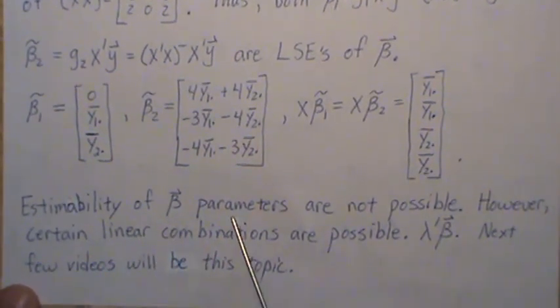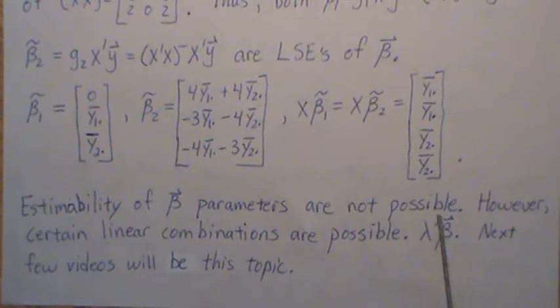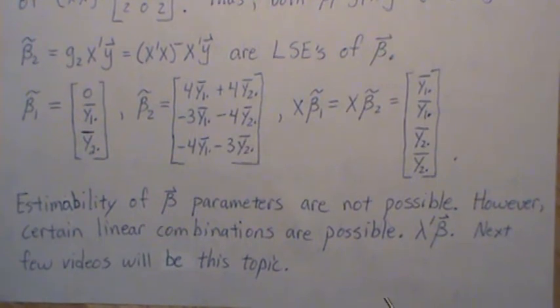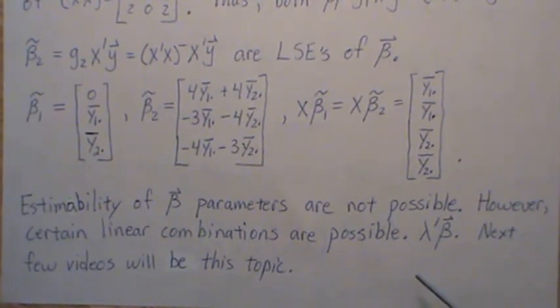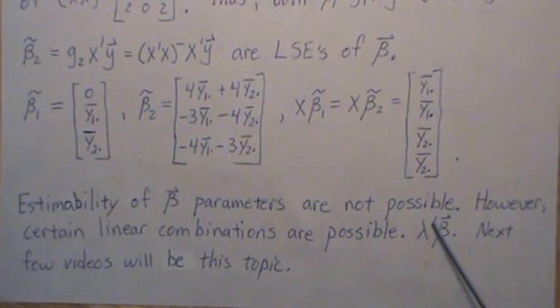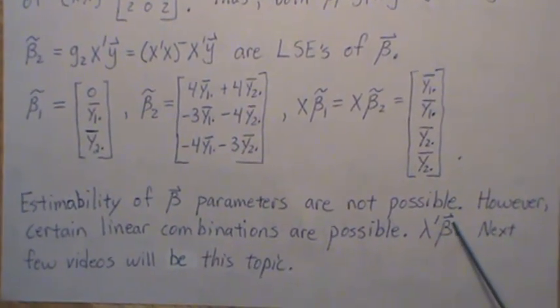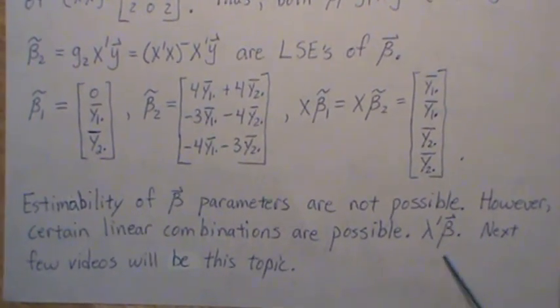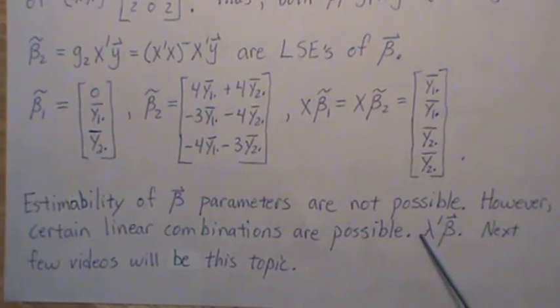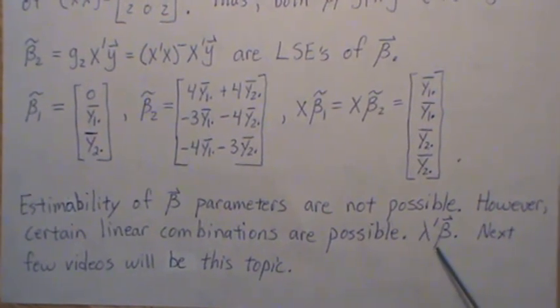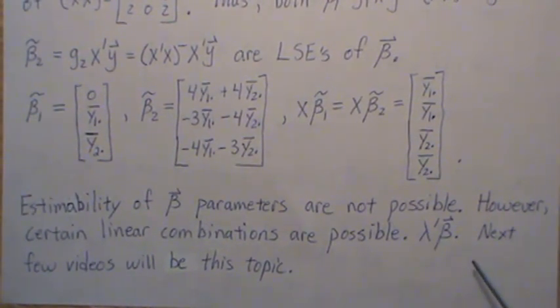So estimability of beta parameters are not possible. I mean, meaning it's not unique. However, certain linear combinations of the beta parameters, call it lambda prime beta. So this is a vector and that produces linear combinations of our beta parameters. This can be estimable. And that's the big topic of estimability. And so the next few videos will be on this topic. And I'm going to say three to five videos will be on estimability because of how important it is in design of experiments.